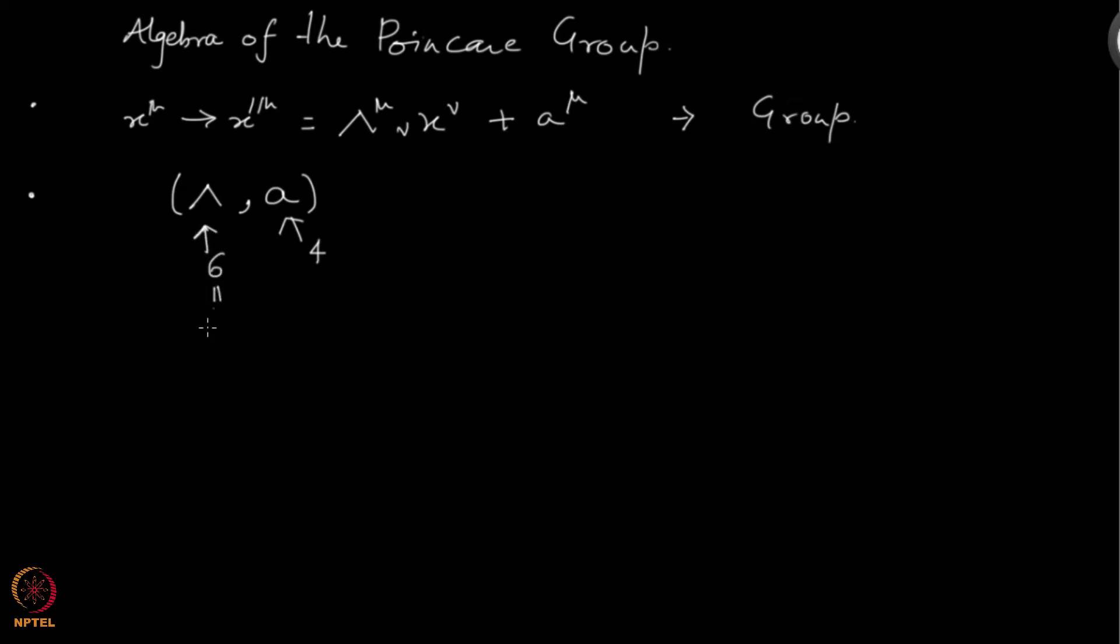The six were basically three plus three, where three parameters parameterized rotations, three parameters parameterized boosts. Boost meaning going from one frame to another frame, or equivalently changing the velocities by some amount. There are three boosts and three rotations and four translations. You have in total ten, six plus four, ten. This group is parameterized by ten parameters. It is a ten parameter group.